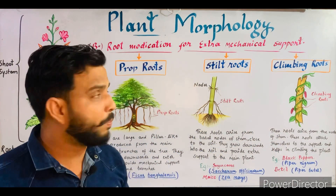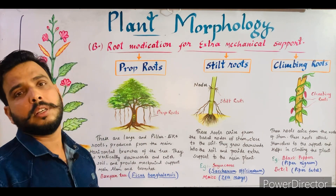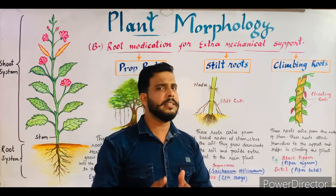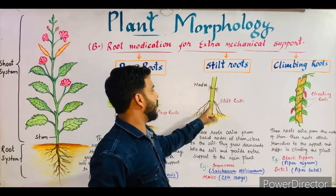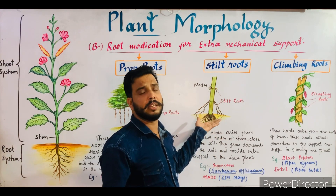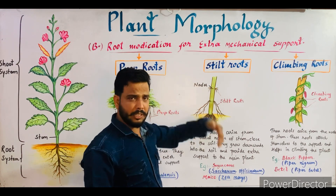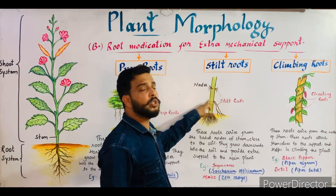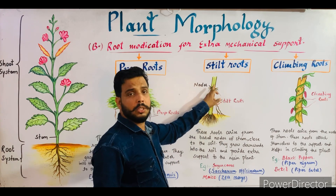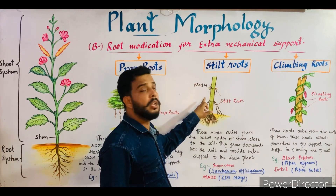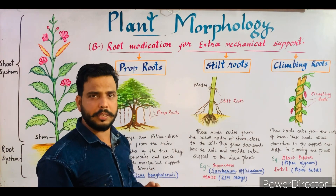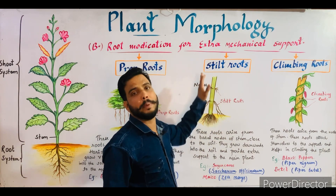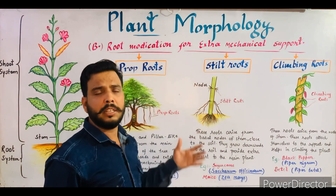The next type is stilt roots. Stilt roots are generally present in sugarcane and the maize plant. Both plants are slender and their roots are not too deeply developed because they consist of fibrous roots, so these plants require extra support. As you can see in this diagram, from the basal nodes of the stem some special types of roots arise which grow downward and enter into the soil, thus providing extra support to the main stem.